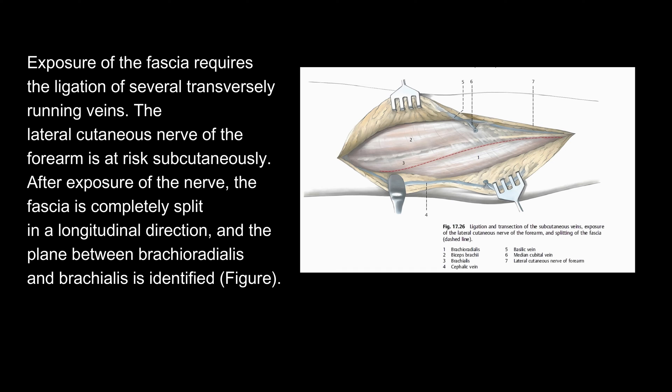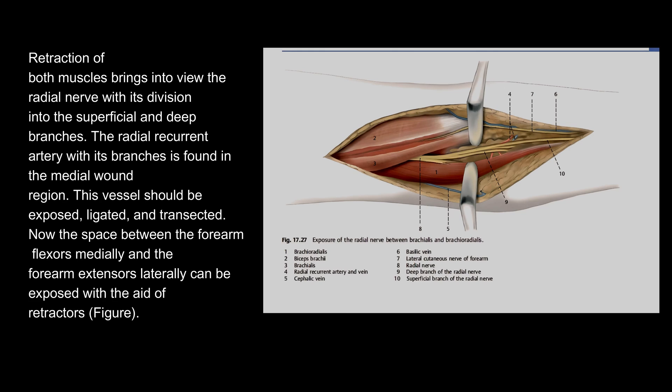The lateral cutaneous nerve of the forearm is at risk subcutaneously. After exposure of the nerve, the fascia is completely split in a longitudinal direction and the plane between brachioradialis and brachialis is identified. Retraction of both muscles brings into view the radial nerve with its division into the superficial and deep branches.